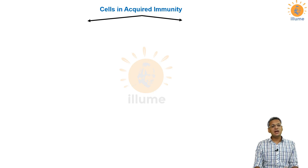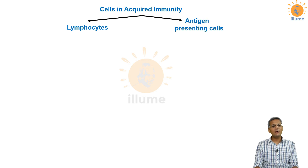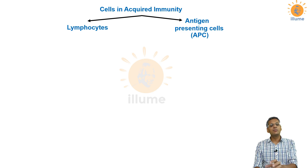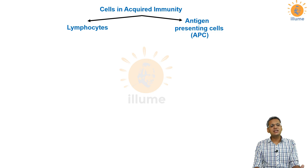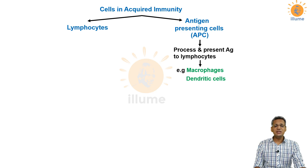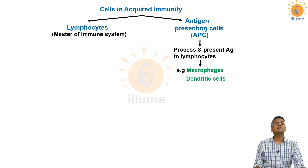First of all, I'll discuss about cells which have a role in acquired immunity. There are two types of cells: lymphocytes and antigen presenting cells (APCs). APCs recognize the antigen, process it, and then present those antigens to lymphocytes so that lymphocytes can act on them. There are basically two types of APCs: macrophages and dendritic cells.